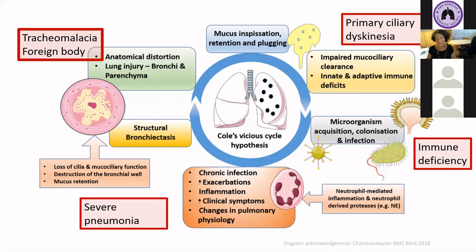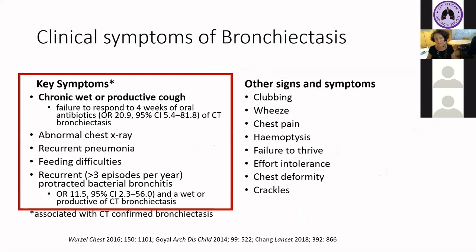If we need to identify cases early, how do we do that? There are key clinical symptoms associated with CT-confirmed bronchiectasis. Chronic wet productive cough has a very strong association with CT-confirmed bronchiectasis, as does chronic radiological change on chest x-rays, histories of recurrent pneumonia, feeding difficulties, or recurrent episodes of chronic wet cough. Other clinical signs of bronchiectasis include clubbing, wheeze, chest pain, hemoptysis, failure to thrive, effort intolerance, chest deformity, and crackles. These are all described variably and probably relate to the severity of the disease as well as underlying etiologies and risk factors.